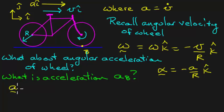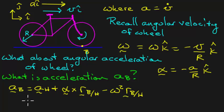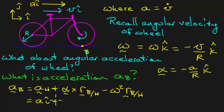Using the relative acceleration relationship: the acceleration of point B equals the acceleration of the hub, plus alpha cross r_B/H, minus omega-squared times r_B/H. The acceleration of the hub equals a in the i-hat direction, since the hub belongs to the same rigid body as the frame. The angular acceleration term is minus a over r in the k-hat direction, cross r_B/H.